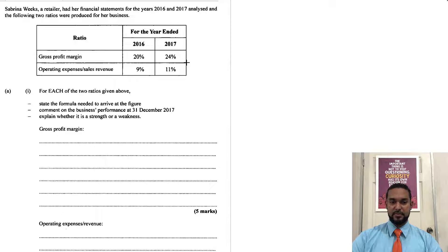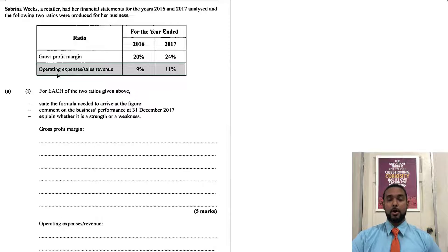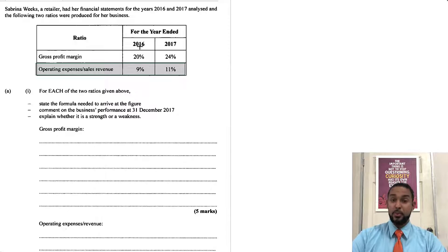So we have 2016 and 2017. We have gross profit margin: 20% then 24%. And then we have operating expenses to sales revenue — you could also call that the operating expense margin — so 9% to 11%. Both of these ratios increased between 2016 and 2017.